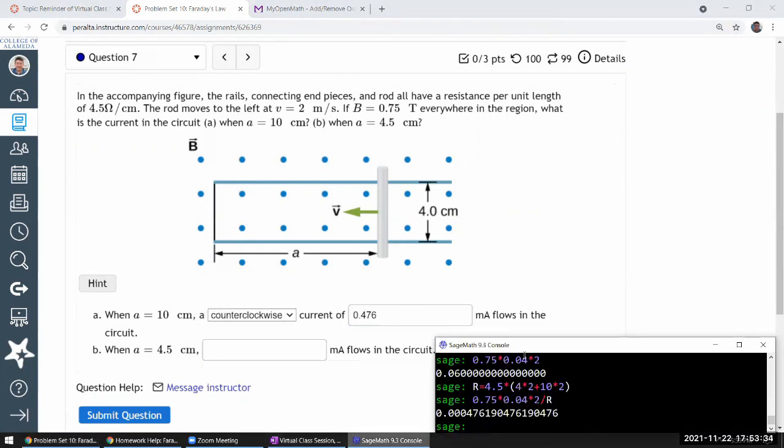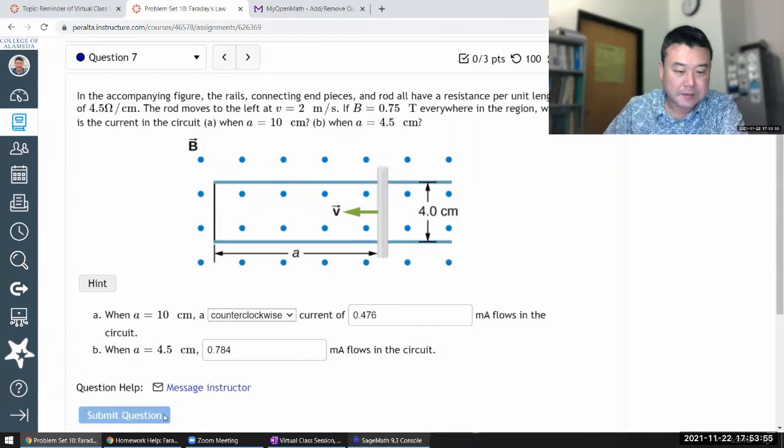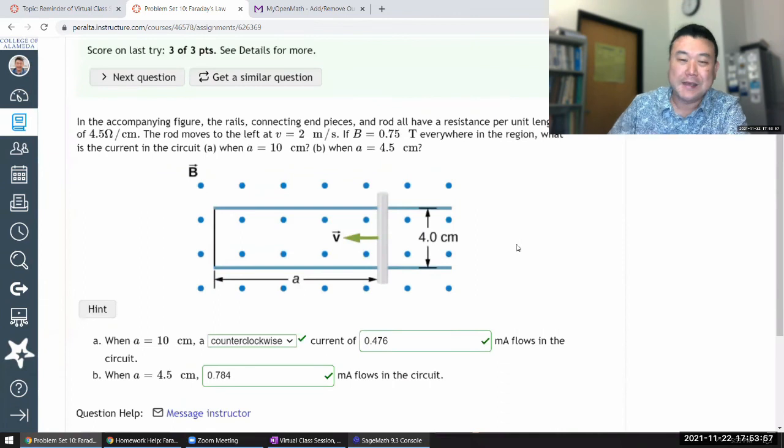Let me just get a numerical value for this again. So I just need to change my value of R. And 10 centimeter changes to 4.5. Wait. So, okay, 0.784. Why are they so small? It makes me feel like I made a mistake. Even when I did it.